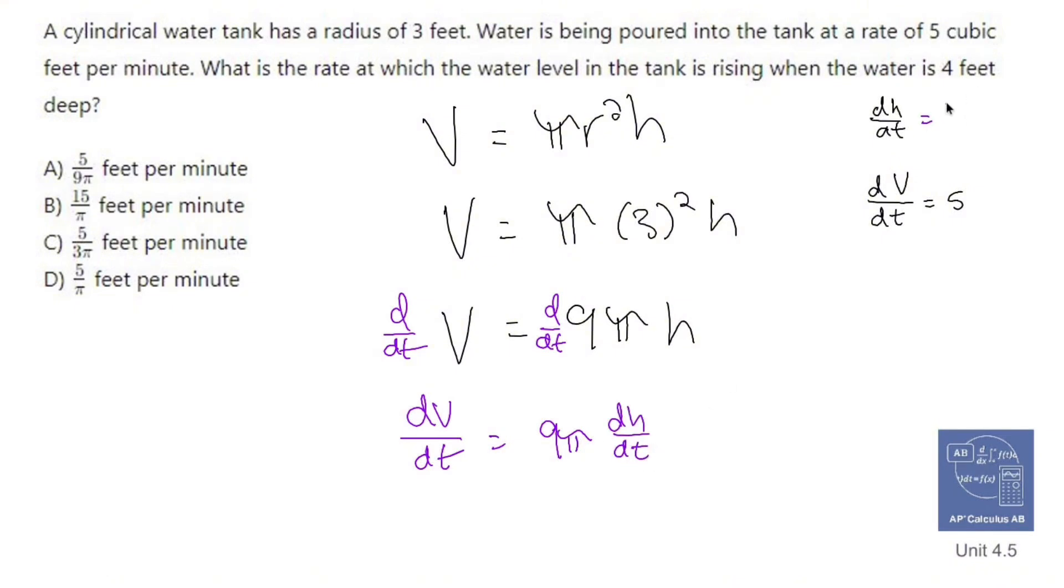Okay, I need to find dh dt. I know that dv dt is going to be 5. And that's going to be equal to 9 pi dh dt. Let's divide both sides by 9 pi. And dh dt is going to equal 5 over 9 pi.